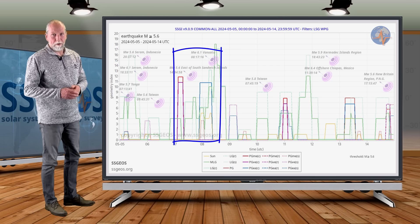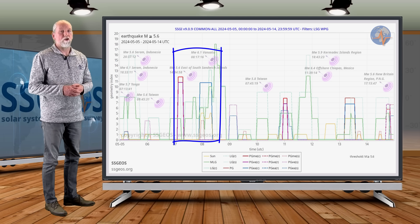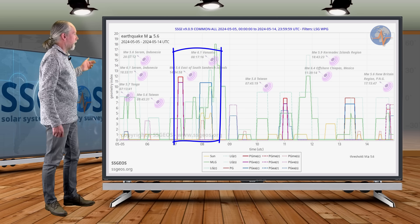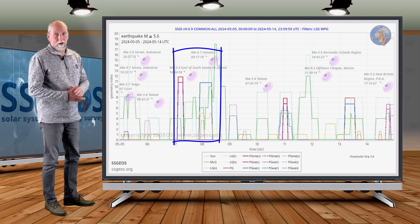Then on the 7th we had a planetary conjunction, Mercury, Venus and Uranus. I warned about that planetary conjunction and we did see some minimal clustering, not all that much. 5.6 at the South Sandwich Islands region and 6.1 at Vanuatu.